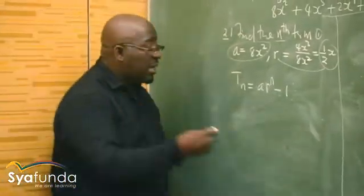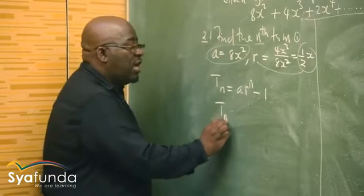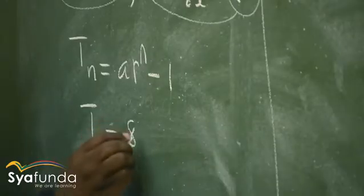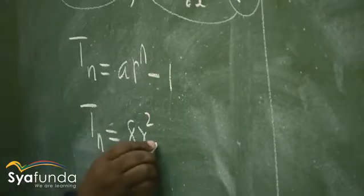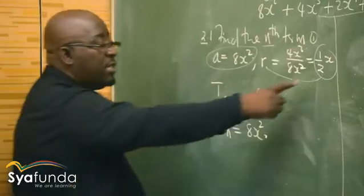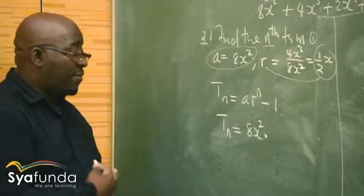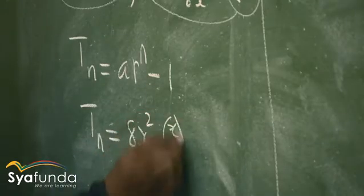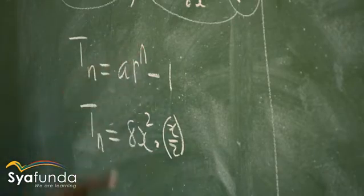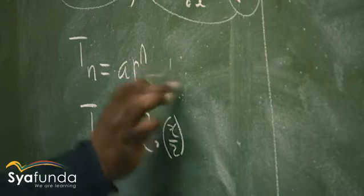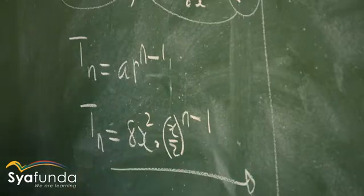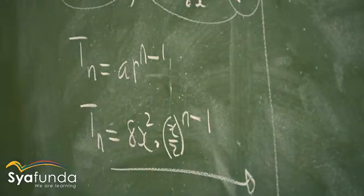Let us find the general term. Our general term, or nth term, in this particular case: Tn will be — what is our first term? It is 8x squared. Times what is our r? Our r in this case is x over 2. So this is times x over 2, to the power n minus 1. So this is the general term — ar to the power n minus 1. That is exactly what we wanted to get.